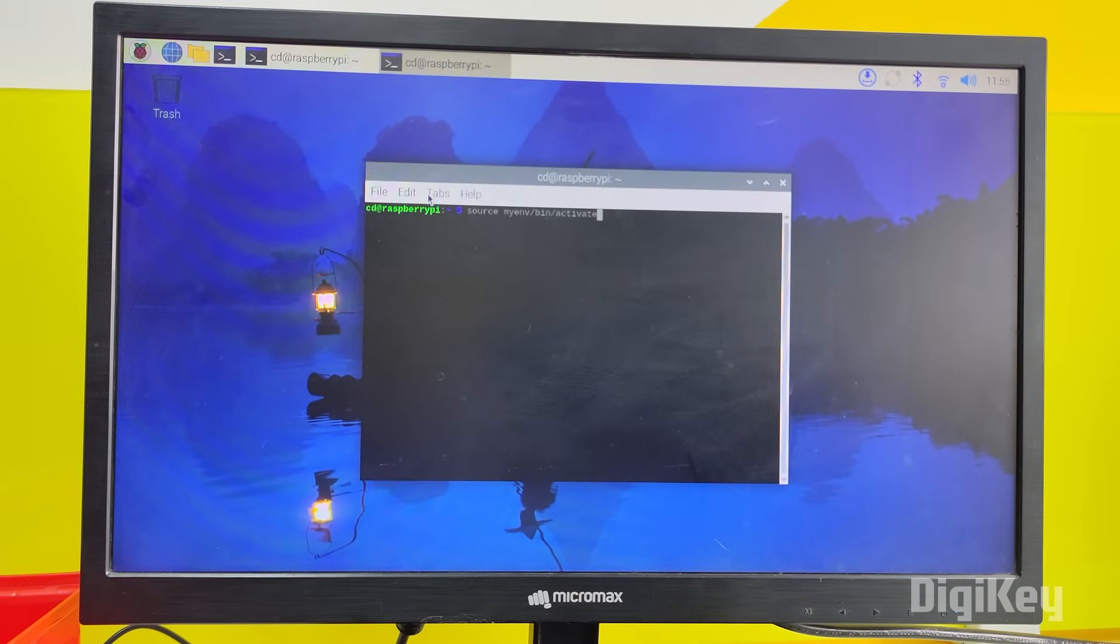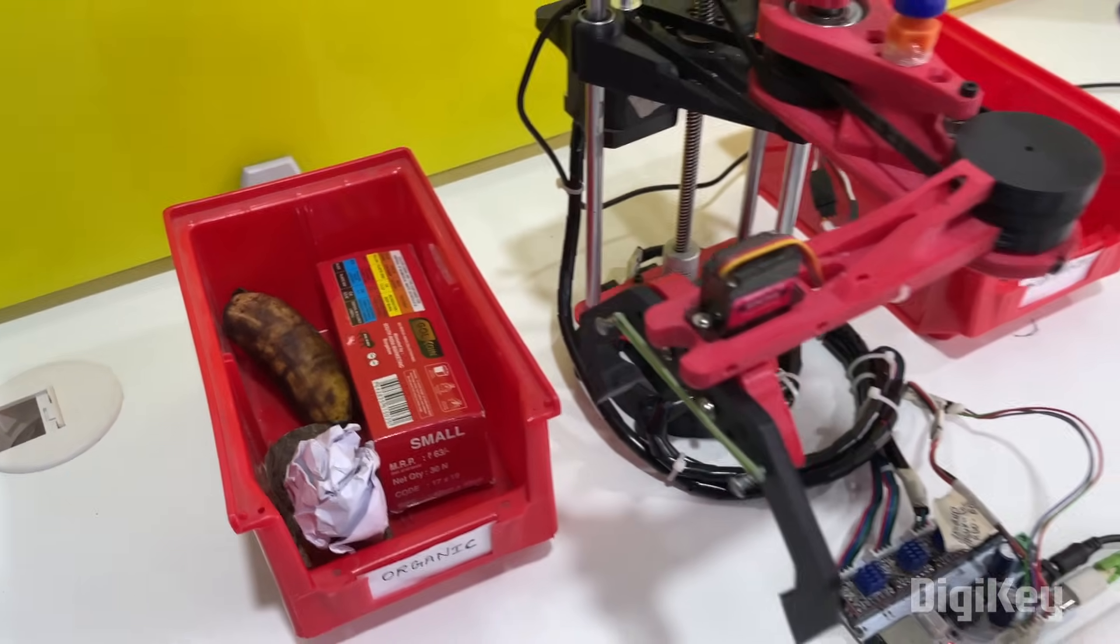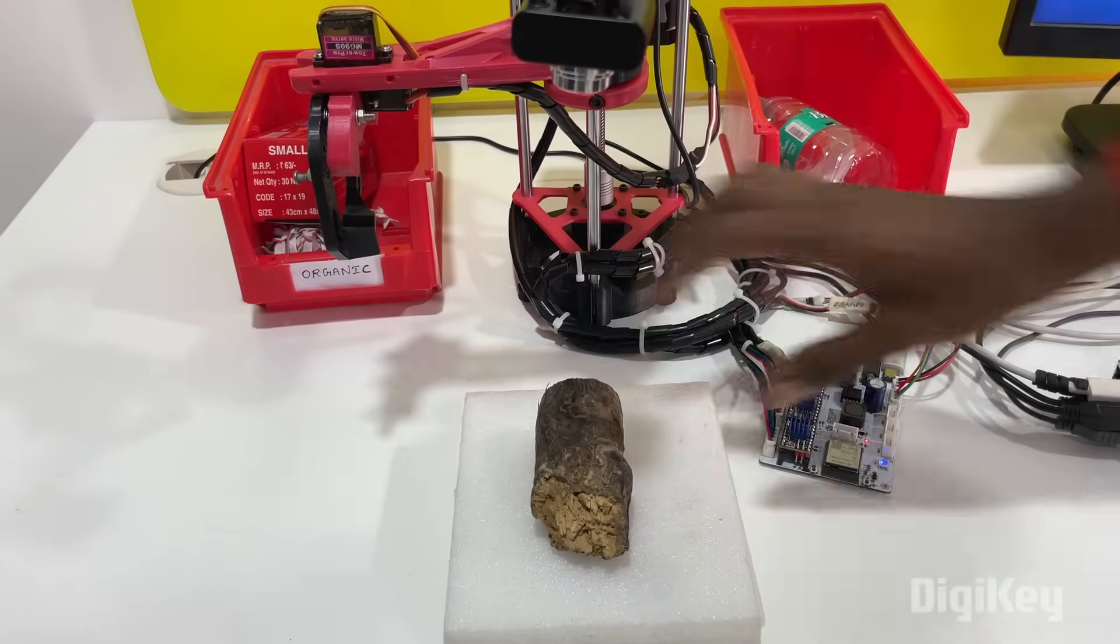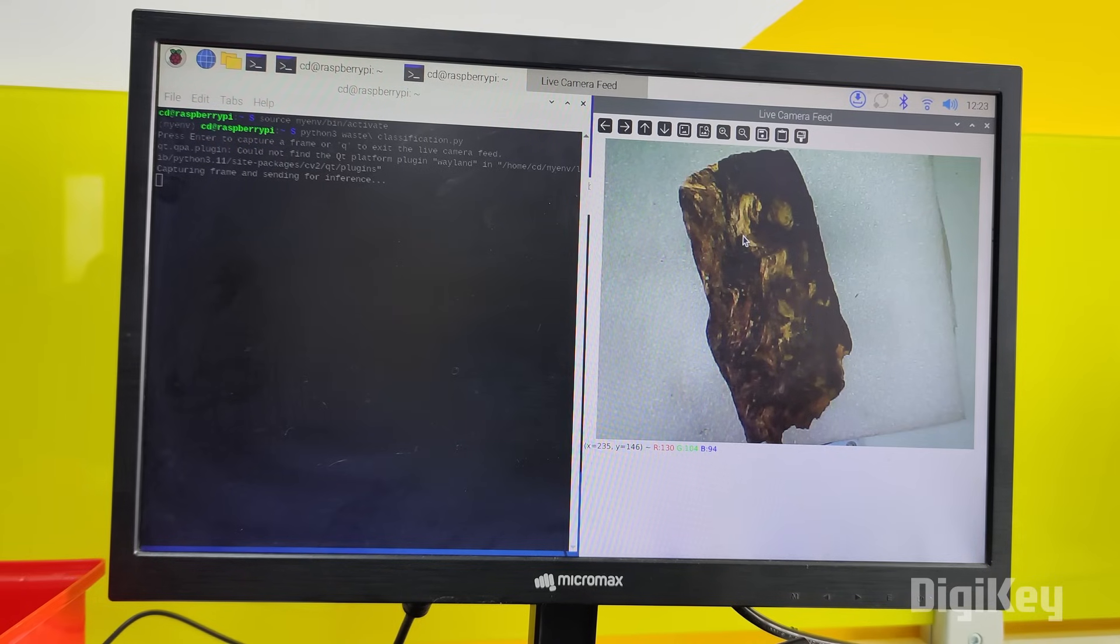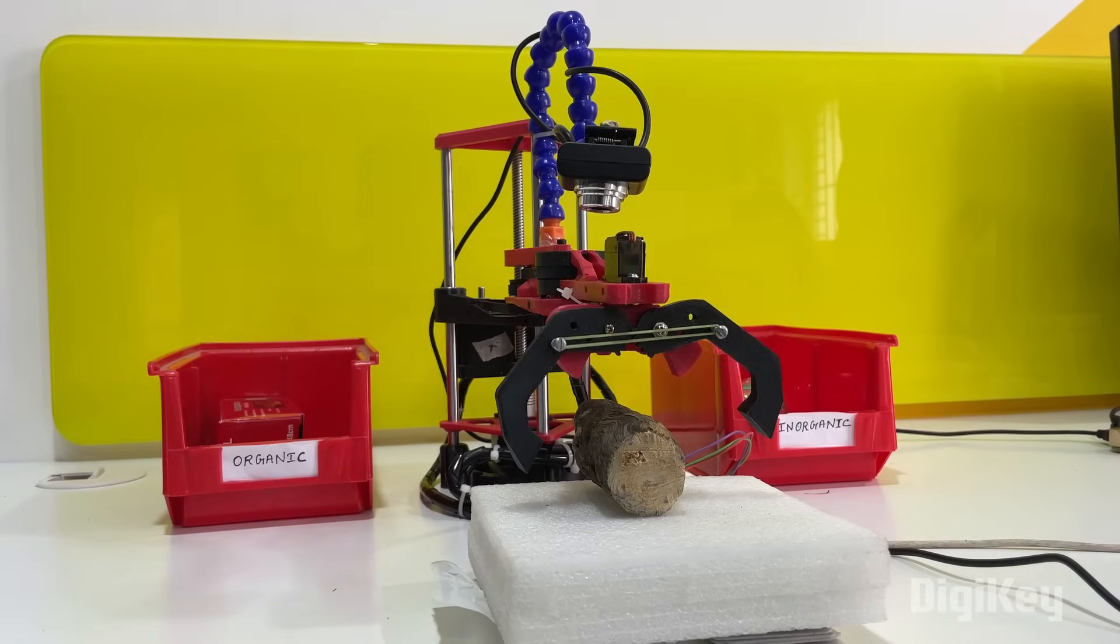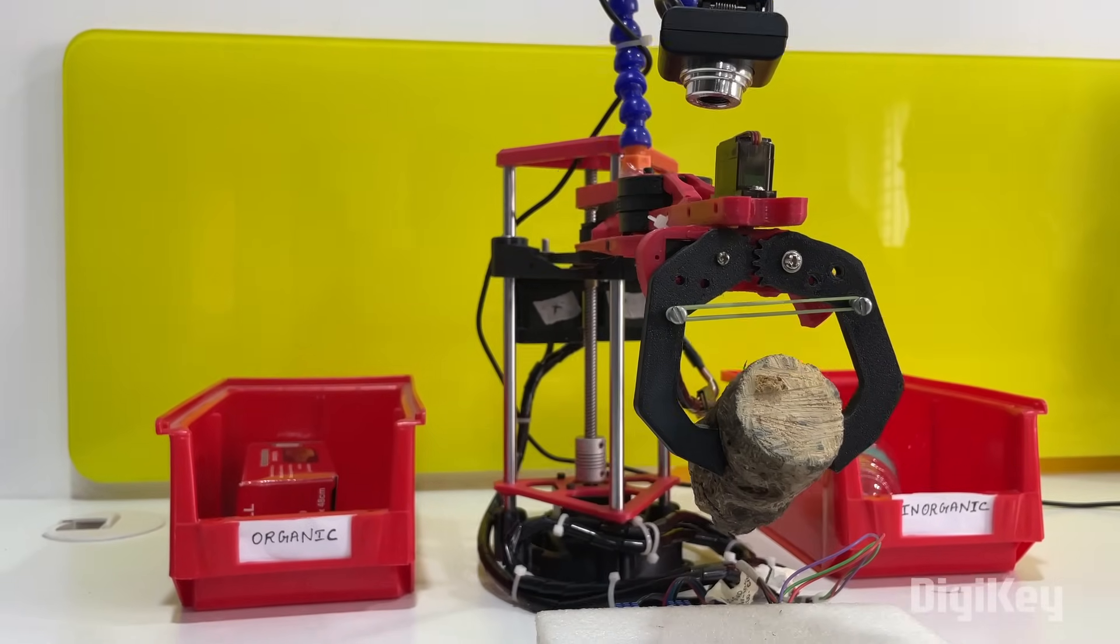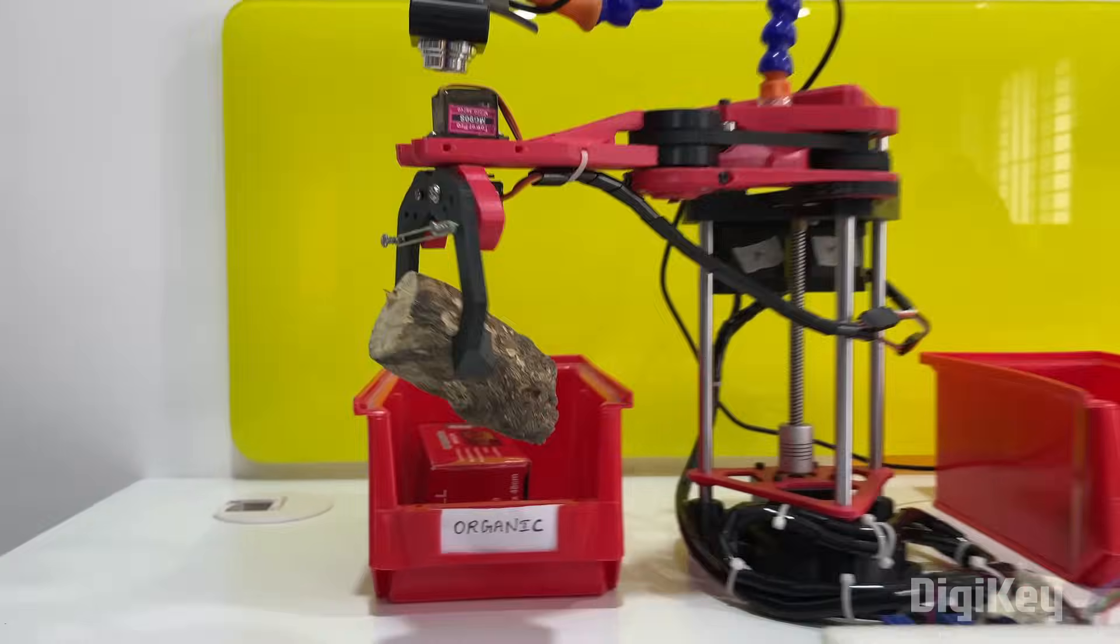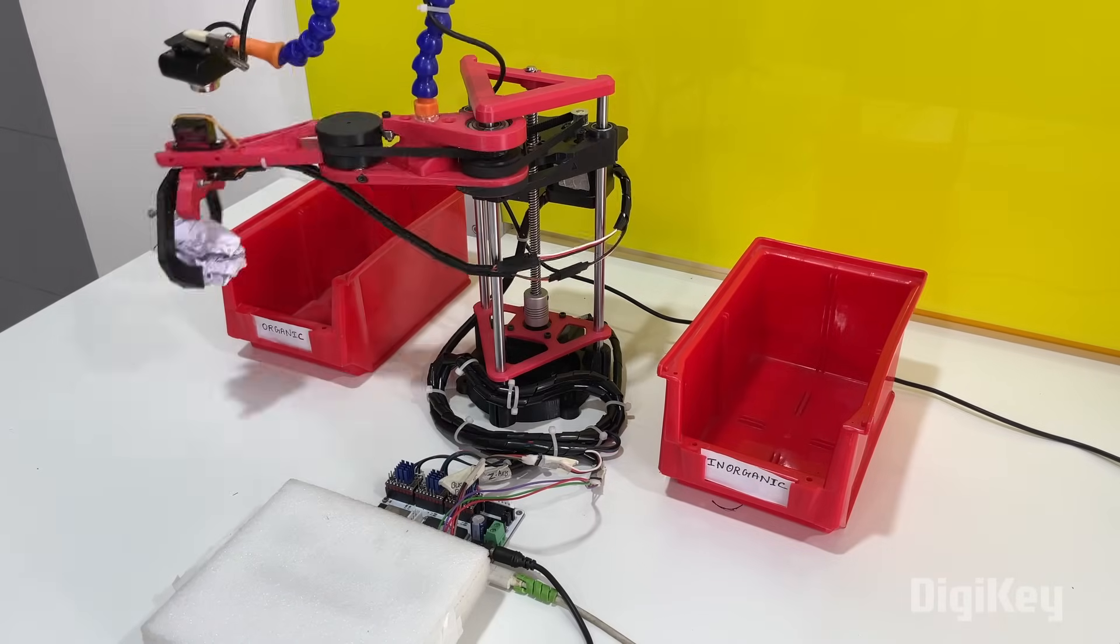Open the Python script that was explained earlier. Ideally, the waste should come in on a conveyor, but let's place the waste manually here and press on enter. The Pi classifies the type of waste placed and instructs the robotic arm to pick it and place it in the respective box. Then place the next object and the same thing repeats.